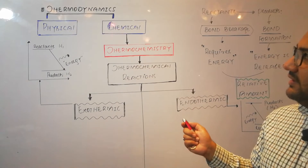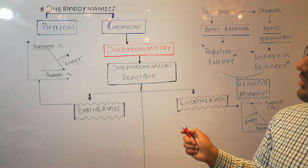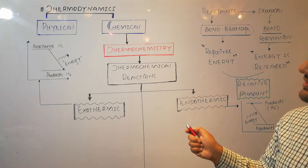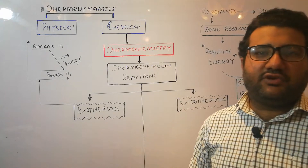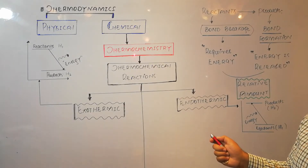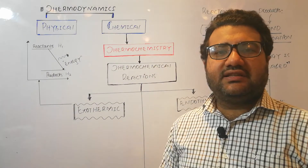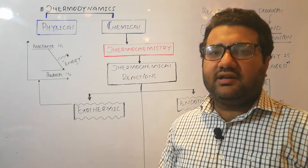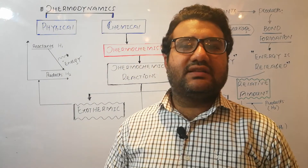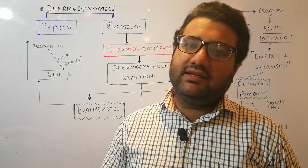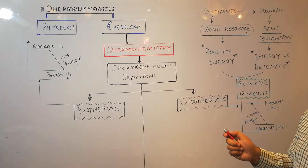In the case of any physical or chemical change, that is called thermodynamics. But if we talk about only the study of energy changes during any chemical process — meaning we are discussing just one branch of thermodynamics — then that branch will be called thermochemistry. In thermochemistry, we deal with the study of the energy changes involved during any chemical reaction, not physical changes.